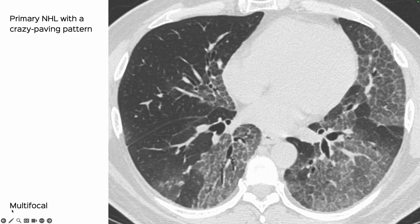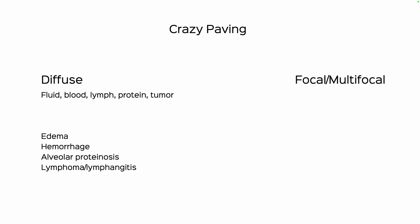A patient with primary non-Hodgkin's lymphoma proven on biopsy shows multifocal crazy paving — not truly diffuse. But if you did have diffuse crazy paving, what would produce it? It would be fluid, blood, lymph, protein, or tumor — meaning edema, hemorrhage, alveolar proteinosis, lymphoma, lymphangitis. You can also have rare causes like Niemann-Pick disease, where you have abnormal protein within the septae.